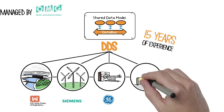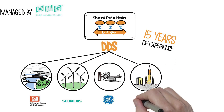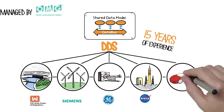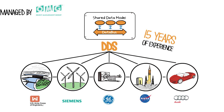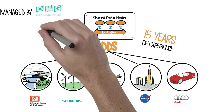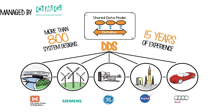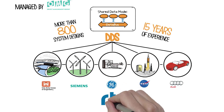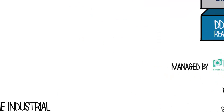NASA's Launch Control at Kennedy Space Center, the world's largest SCADA system; and Audi, a part of the world's largest automaker. More than 800 of these system designs are powered by RTI. We applied what we learned from our customer successes to the IIRA and can apply them to your industrial internet system.